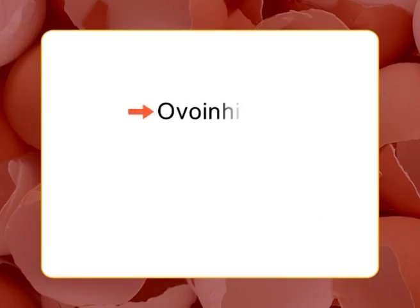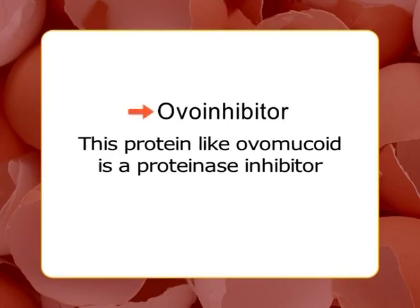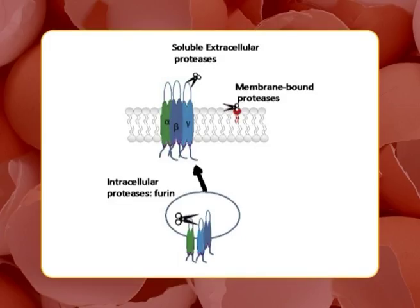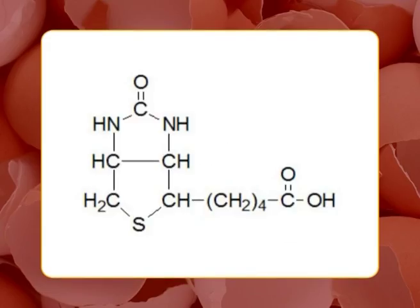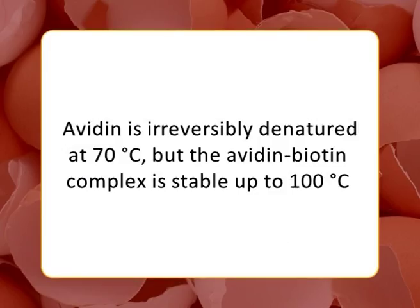The seventh protein is ovoinhibitor, which like ovomucoid is a proteinase inhibitor. It inhibits the activities of trypsin, chymotrypsin, and some microbial proteinases, acting as a defense against microbial invasion. The eighth protein is avidin, a basic glycoprotein and tetramer consisting of four identical subunits, each binding one mole of biotin. Avidin is irreversibly denatured at 70°C, but the avidin-biotin complex is stable up to 100°C.